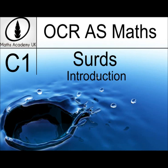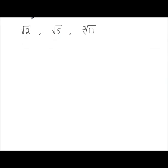An introduction to surds. The square root of 2, the square root of 5, the cube root of 11 — these are all examples of surds. For all three of these, you cannot simplify them by removing the square root or the cube root. So these are surds.